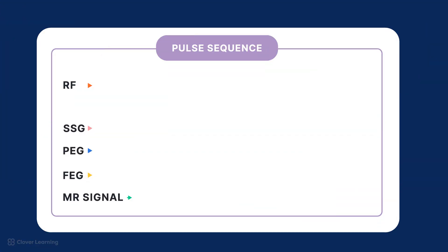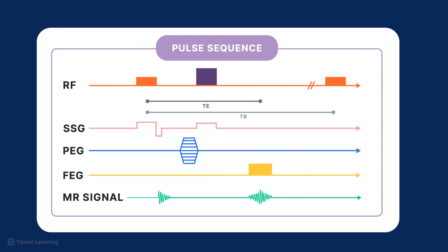Let's take a look at a pulse sequence diagram as a whole. A pulse sequence diagram is a graphical representation of the sequence of events that happen during a scan. It provides a detailed view of how radio frequency or RF pulses, gradient fields, and signal acquisitions are timed and organized to create an MRI image.